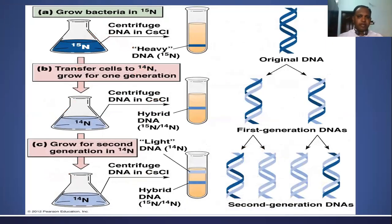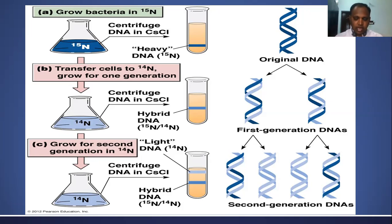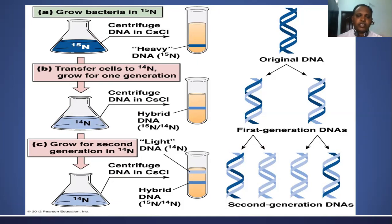The next experiment was conducted by Meselson and Stahl — also called the Meselson-Stahl experiment — which is experimental proof that DNA replication is semi-conservative. The semi-conservative mode of DNA replication was originally proposed by James Watson and Francis Crick. Initially, bacteria were grown in N15 media for several generations. The isolated DNA was separated and verified using cesium chloride density gradient centrifugation, and they got only one band at the bottom of the tube.